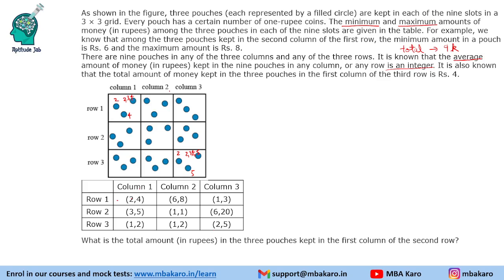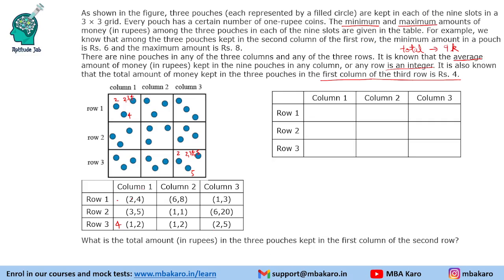It is also known that the total amount of money kept in the three pouches in the first column of the third row is 4 rupees. So first column, third row, total is 4. We will make a table of rows and columns and try to fill in the values.